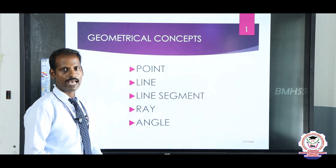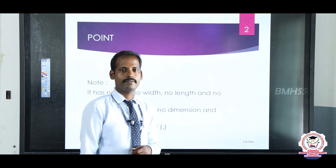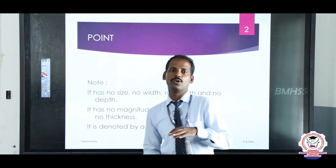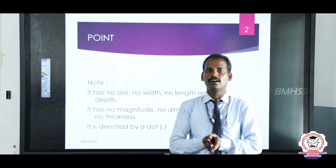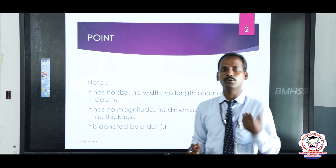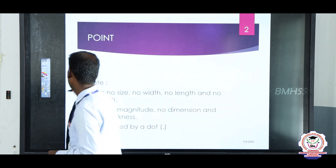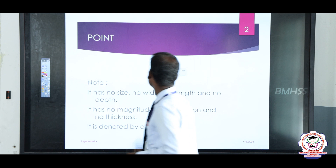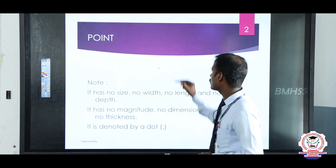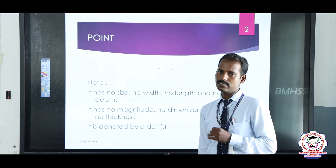First one: point. What is a point? A point has no size, no width, no depth, no length. It has only a point — this point. This point is denoted by a dot.